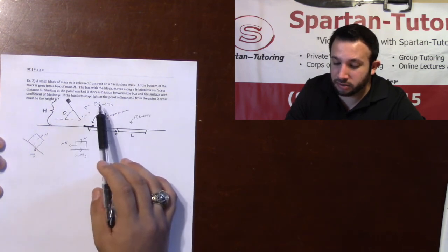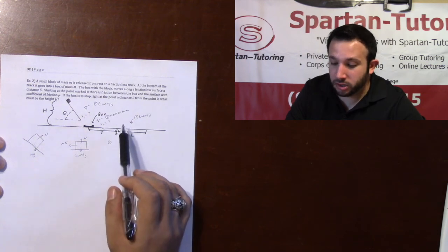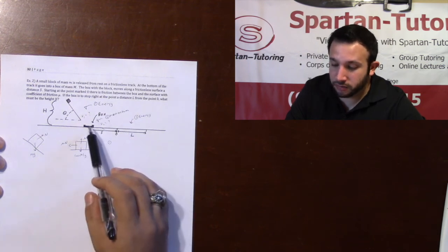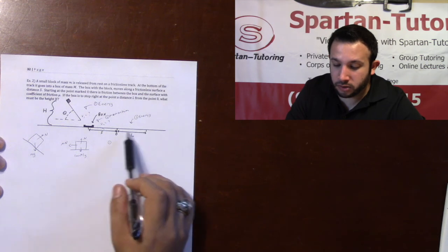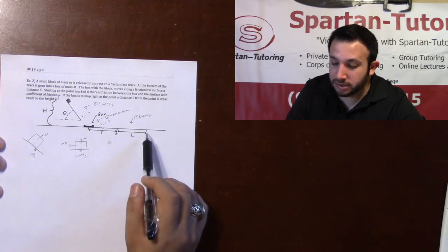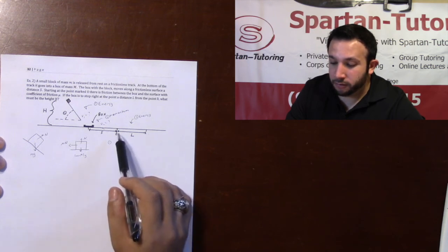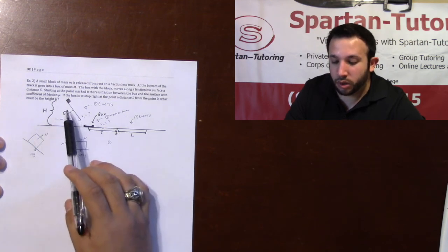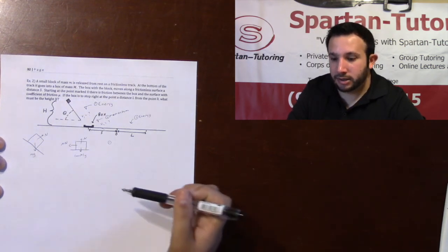Starting at the point mark zero, there is friction between the box and the surface with the coefficient of friction mu. If the box is to stop right at the point a distance L from the point zero, what must be the height H?